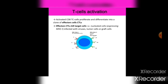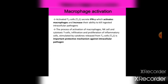Activated CD8 cells proliferate and differentiate into a clone of effector cytotoxic T lymphocytes (CTLs). CTLs kill target cells — nucleated cells infected with virus, tumor cells, or graft cells. MHC class I is expressed on all nucleated cells, while MHC class II is expressed on B cells, macrophages, and APCs. Activated Th cells secrete interferon-gamma, which activates macrophages and increases their ability to kill ingested intracellular pathogens.